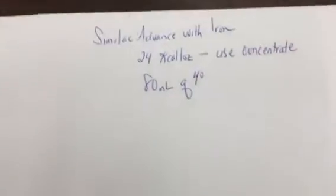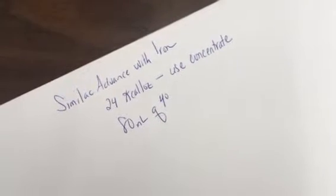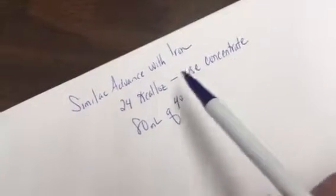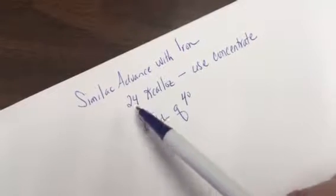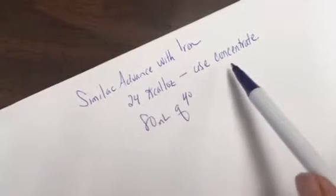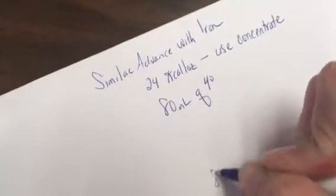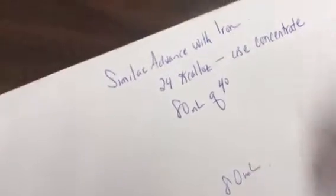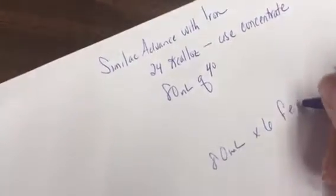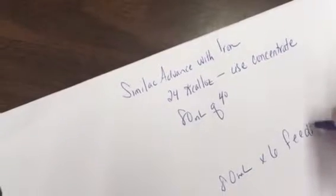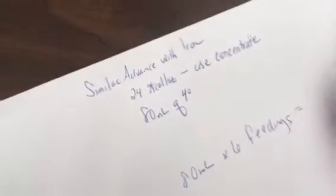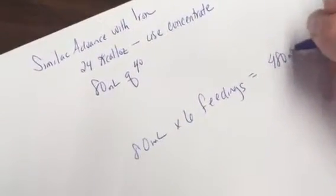In this example I'm using Similac Advanced with Iron because really the only concentrates tend to be standard infant formulas. But instead of making it 20 calories per ounce, I'm going to make it 24 calories per ounce. I'm going to use concentrate and the feeding order is 80 mils Q4 hours. So that basically means 80 mils times 6 feedings per day, and that gives us a total of 480 mils.